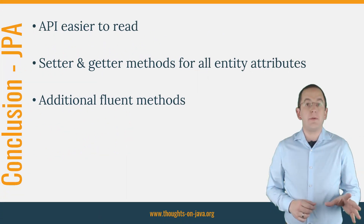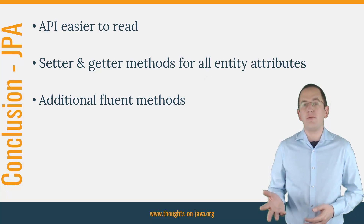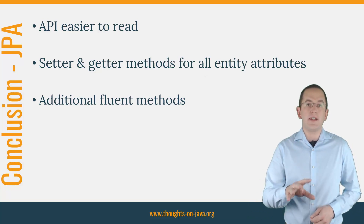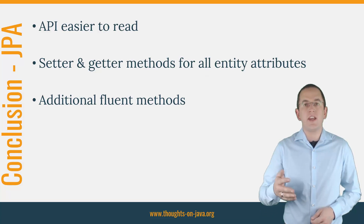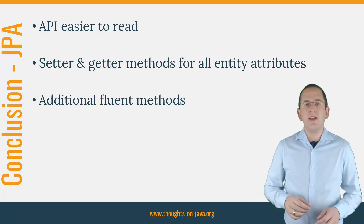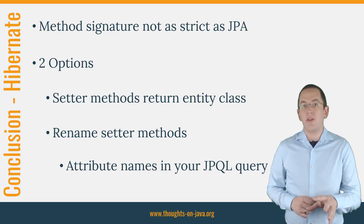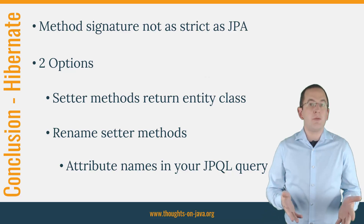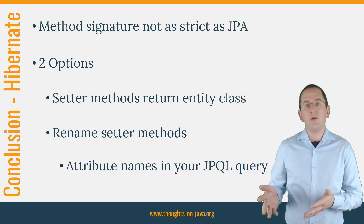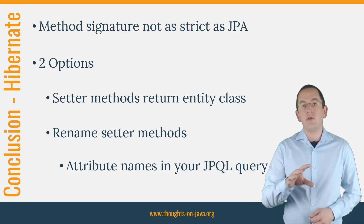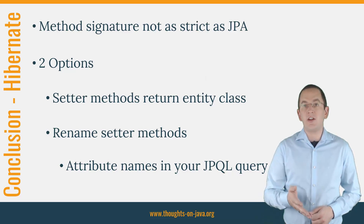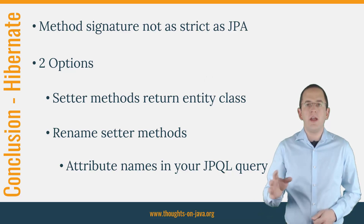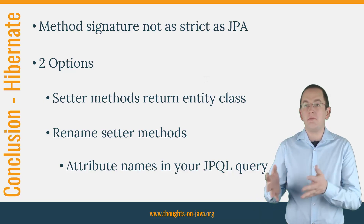The Fluent Interface pattern makes APIs much easier to read. Unfortunately, the JPA specification requires you to provide setter and getter methods for all entity attributes — that prevents you from implementing a clean, fluent API. You can only add the fluent methods in addition to the technical getter and setter methods. Hibernate doesn't define the method signature of your setter methods as strictly as JPA does, so you can change the return type of your setter methods to the Entity class. That enables you to change the calls of your setter methods, but the business code still looks very technical and doesn't flow. If you tell Hibernate to use field-based access, you can rename your setter methods and design a real fluent API. But keep in mind that you still need to reference the attribute names in your JPQL query — some developers find this confusing because the attribute and method names no longer match.